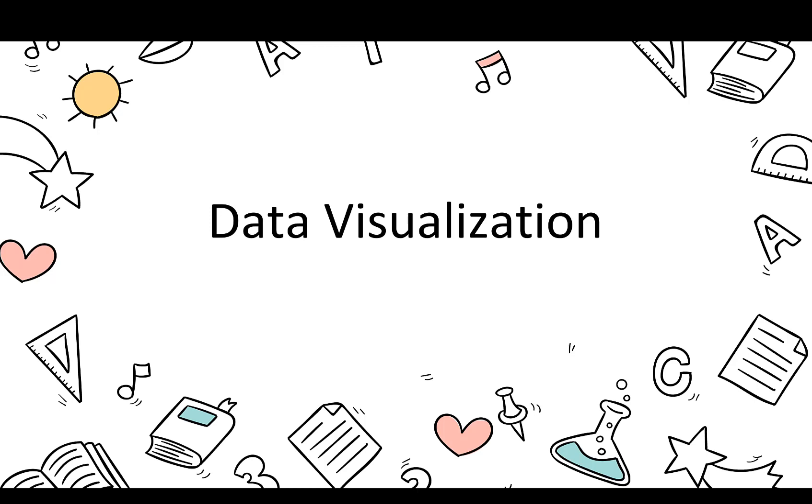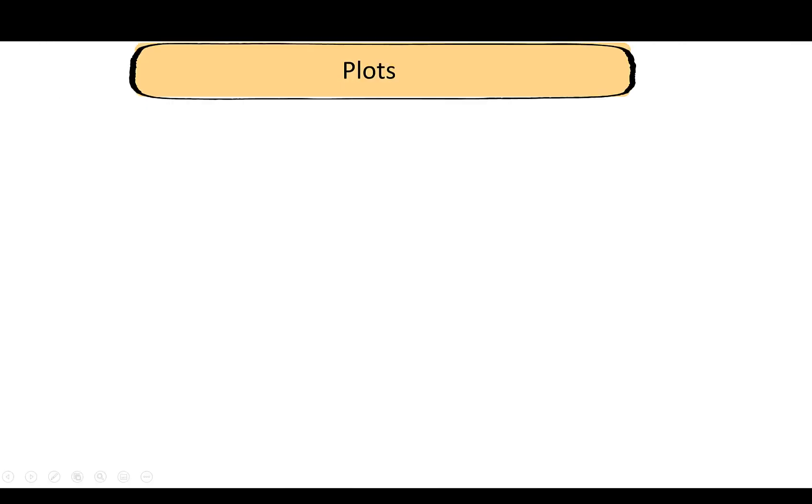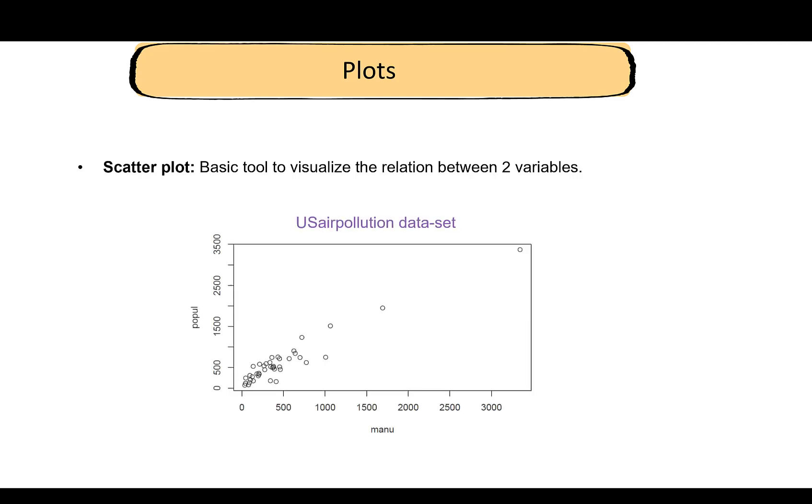Hey everyone, welcome back. In this video we shall take a look at some of the popular methods for data visualization. First, we shall take a look at plots. Scatter plot is the most commonly used and a very basic tool to visualize the relationship between two variables. This is how a scatter plot looks like.